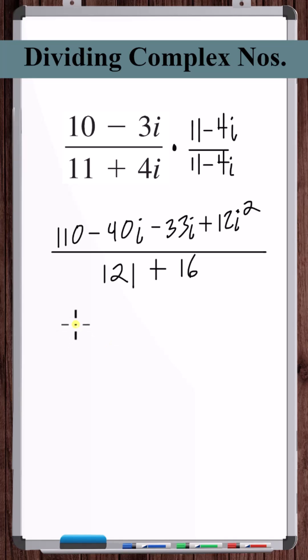Okay, so simplifying: minus 40 minus 33 is minus 73. i squared is negative 1. 110 minus 12 is 98.